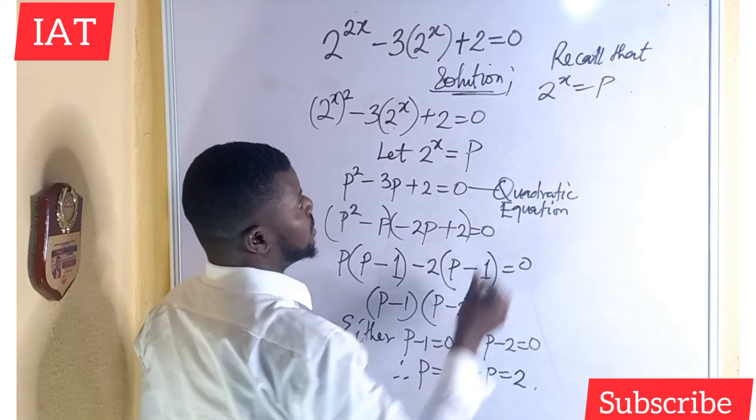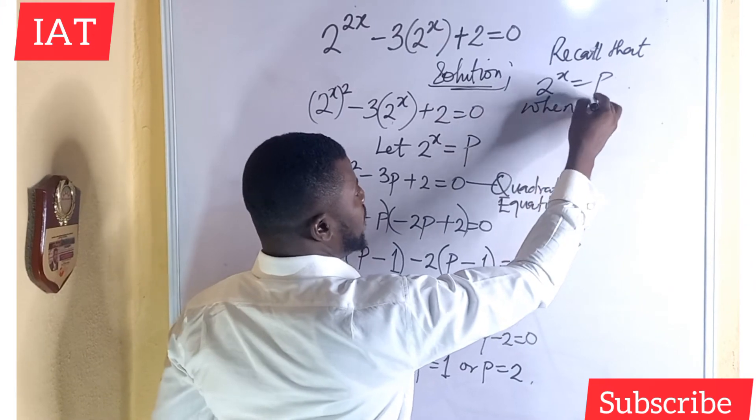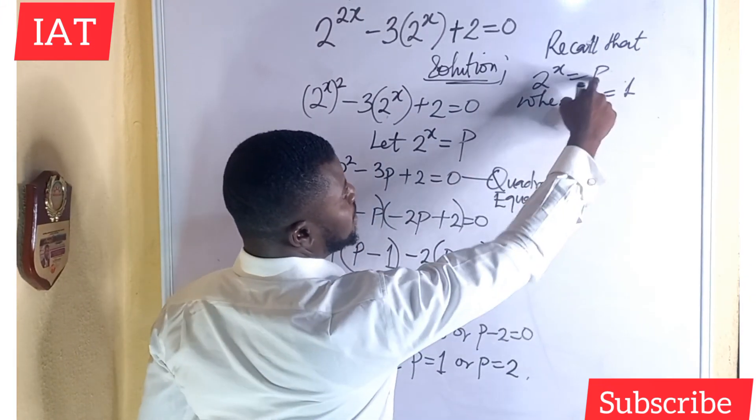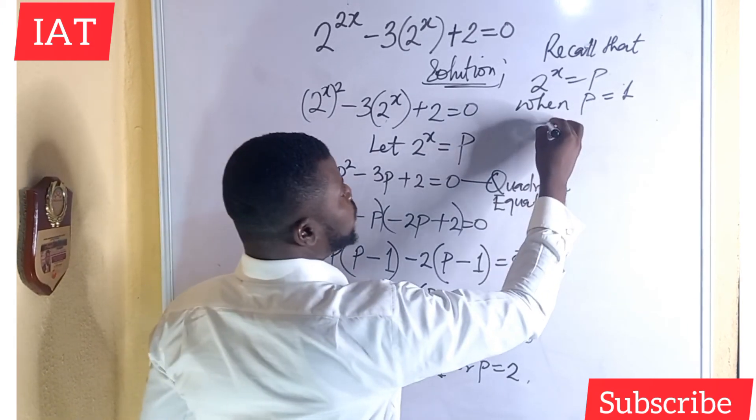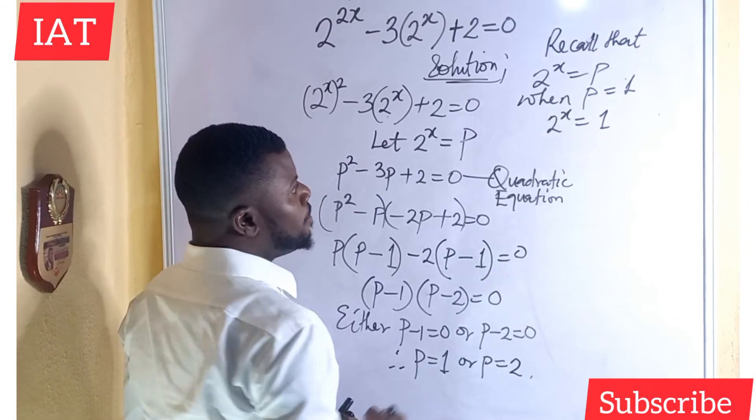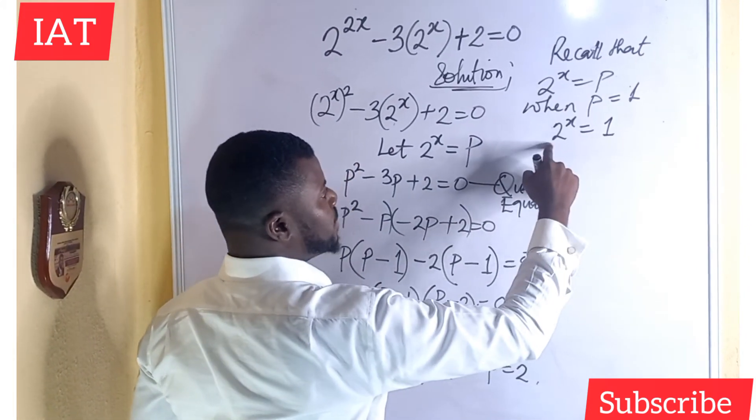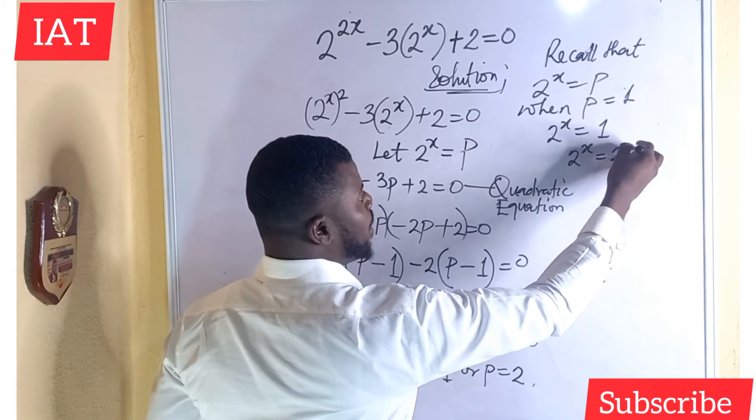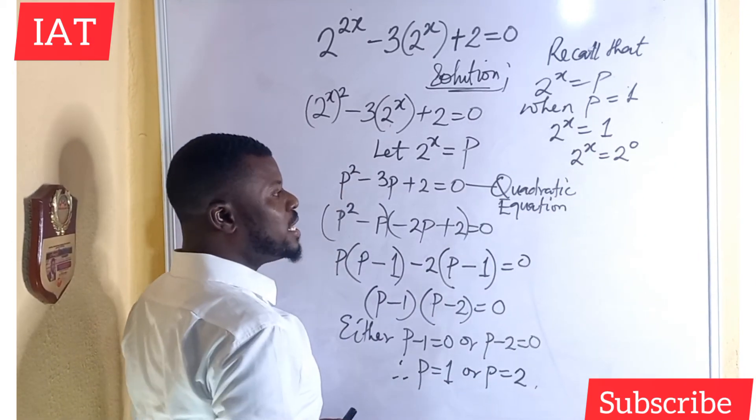let's check for this first case. When p is equal to 1, when p is equal to 1, anywhere I see p, I will substitute 1. So, we have 2 to the power of x equal to 1. At this same point, what do we need to do so that we have a similar base? It becomes 2 to the power of x equal to, if I have 2 to the power of 0, it is 1.